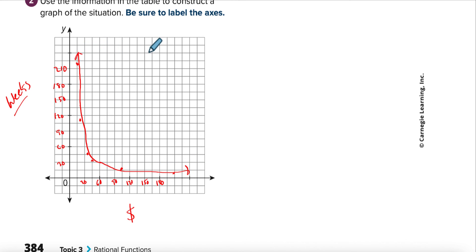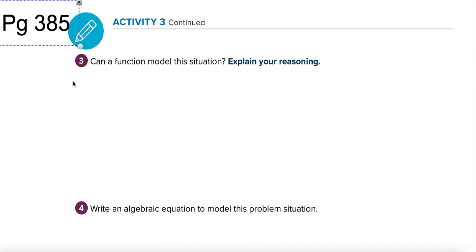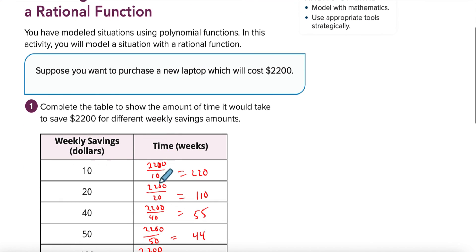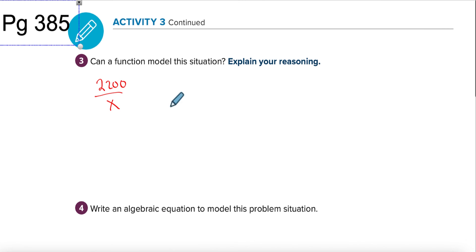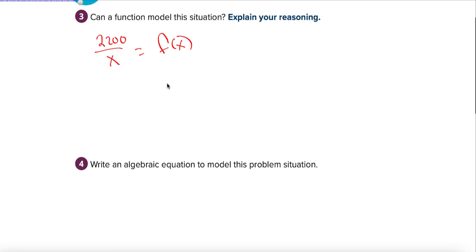On page 385 it asks: can a function model the situation? Every time we were dividing something — you can even see it in our table. What is that value? Every time the x value changed, we had 2200 divided by x. There you have it — that would be our model. Write an algebraic equation to model the situation: f of x equals 2200 over x.